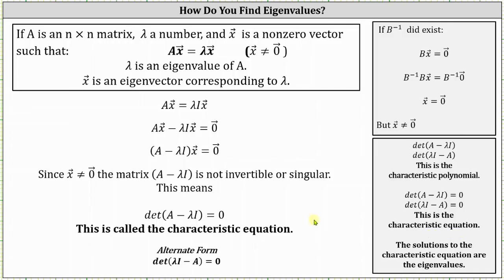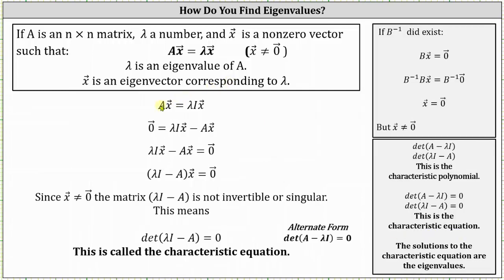Now let's quickly derive the alternative form of the characteristic equation. We start with the same equation, matrix A times vector x equals lambda times the identity matrix times vector x, but instead of subtracting lambda times the identity matrix times vector x on both sides, we subtract matrix A times vector x on both sides, change the order of the equation, and then factor out vector x. Notice how this gives us the alternative form: the determinant of the difference of lambda times the identity matrix and matrix A equals zero. We can use either determinant to determine the characteristic polynomial as well as the characteristic equation.